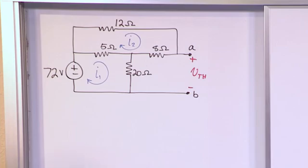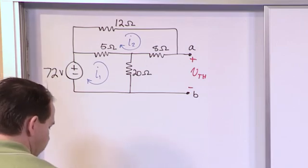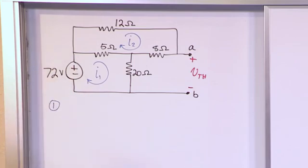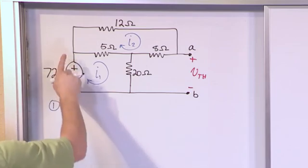All right, so let's go ahead and work first with mesh loop number one. So let's start here. We're going through 72 volts.